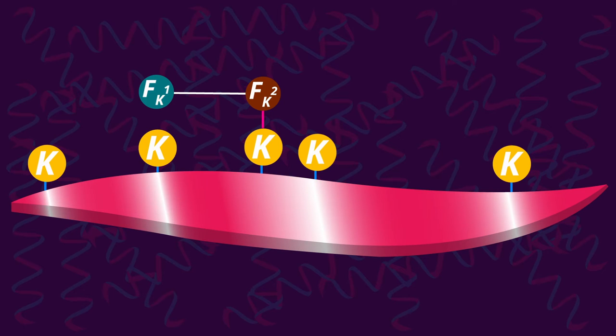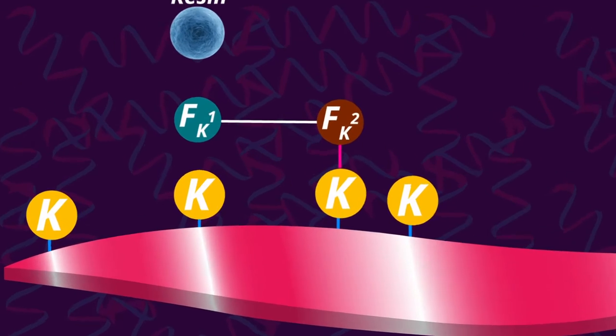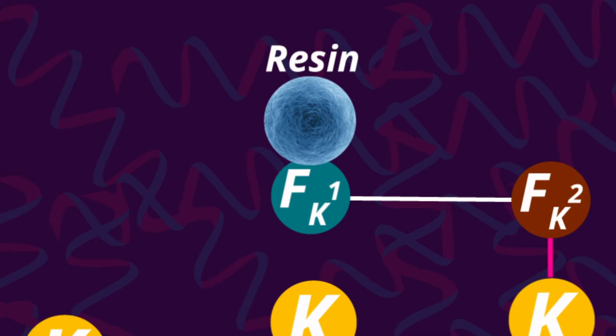At this point, using a special resin, the proteins that reacted with FK2 can be recovered using a process called immobilization.